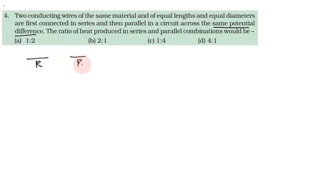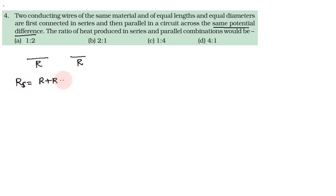Since both wires have the same material, same length, and same diameter, each wire has resistance R. First, they are connected in series; then one of the series is connected in parallel.